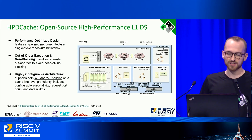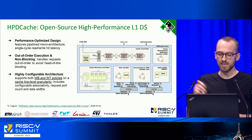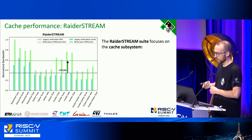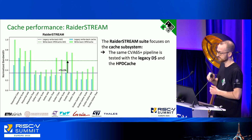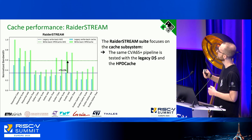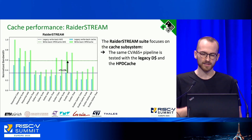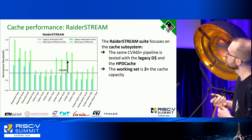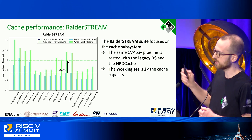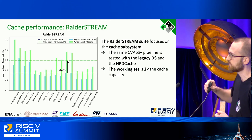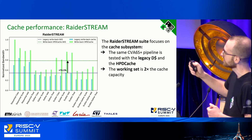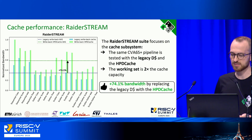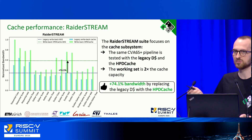The HPDcache is highly configurable like CVA6 — supporting write-back and write-through policies even at cache line granularity. We evaluate it with the same pipeline, two different cache subsystems — the legacy data cache and the new HPDcache in write-back mode — with a working set two times the cache capacity using regular and irregular access patterns (sequential and random vector accesses). With a large enough working set to trigger many misses, we see a 74% bandwidth improvement just by switching the cache.